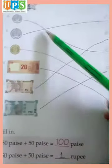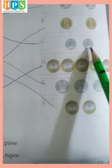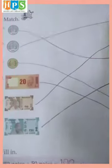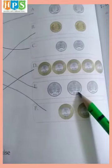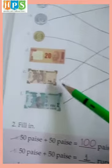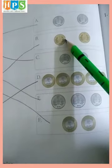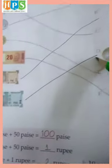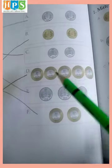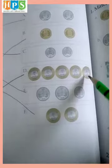1 rupee: we match it — 50 paise plus 50 paise equals 1 rupee. 2 rupees: 2 coins of 1 and 1. 5 rupees: 2 coins of 2 and 2, and 1 coin of 1 rupee. 10 rupees note: to make it, 5 one-rupee coins and 5 one-rupee coins. 50 rupees note: 5 notes of 10 rupees — 1, 2, 3, 4, 5 — means 50 rupees.